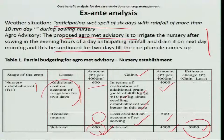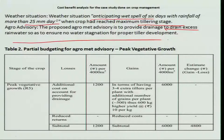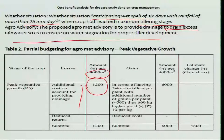Next, we move to another cost-benefit analysis for a weather situation anticipating a wet spell of 6 days with rainfall of more than 25 mm per day — that is 150 mm — at the tillering stage of rice. The agro advisory is to drain the excess water so that tillers will develop very effectively. The additional cost of providing drainage comes to 1,200 rupees per acre. There is no reduced return due to drainage, so the total additional cost is 1,200 rupees.